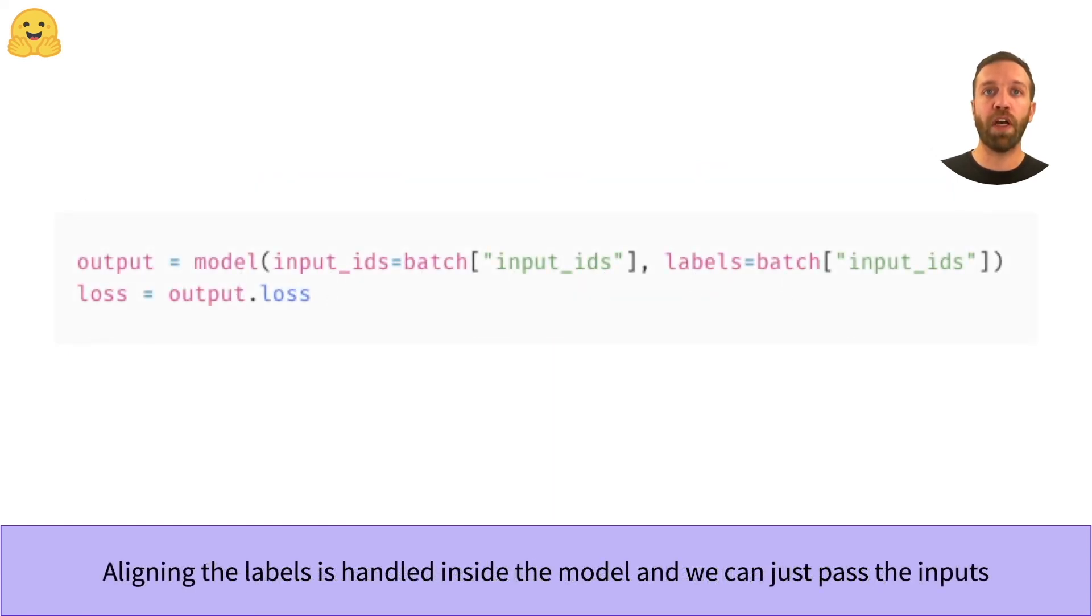Let's have a look at what we need to do to create the labels for causal language modeling in code. If we want to calculate a loss on a batch, we can just pass the input IDs as labels and all the shifting is handled in the model internally.